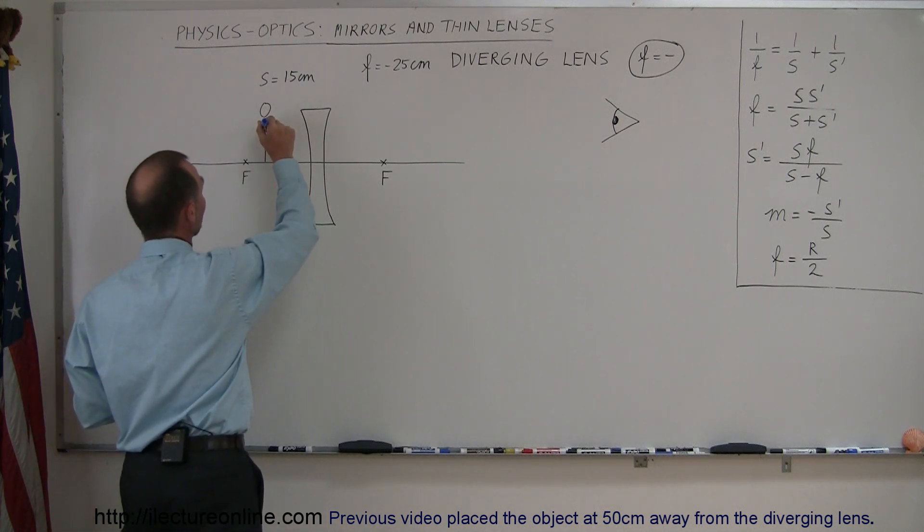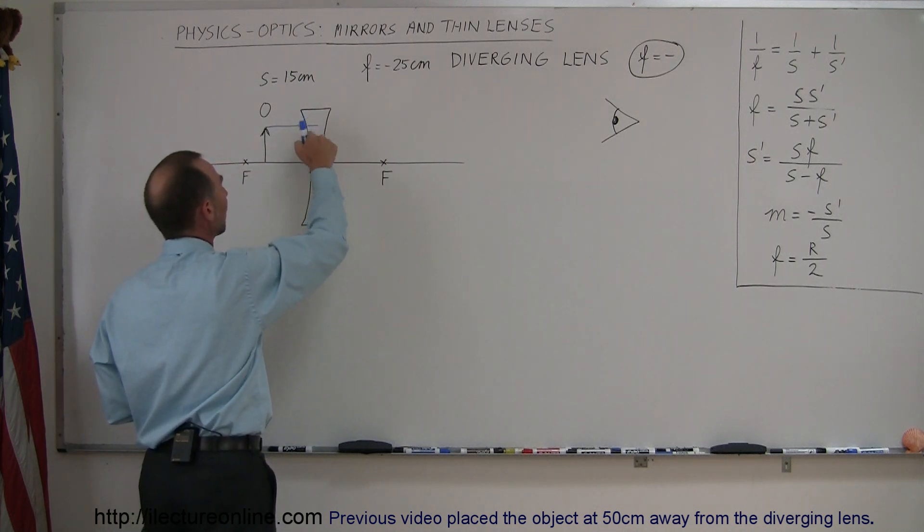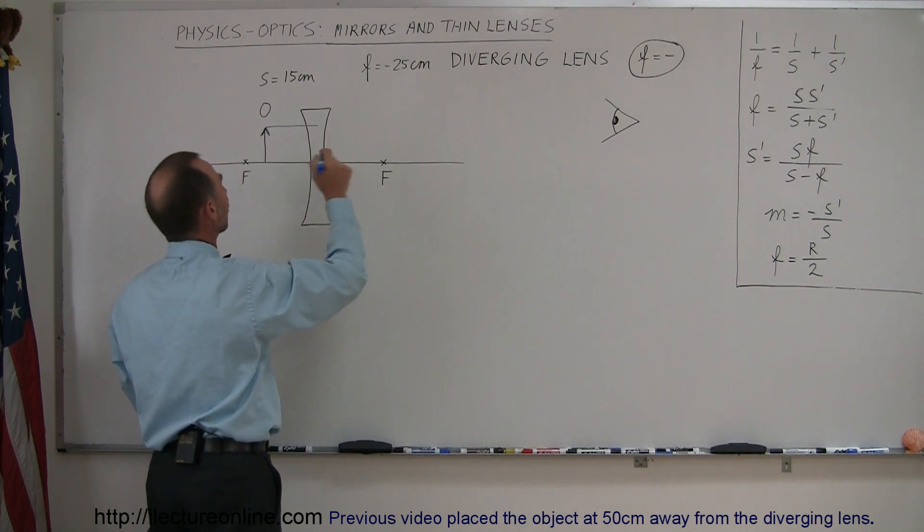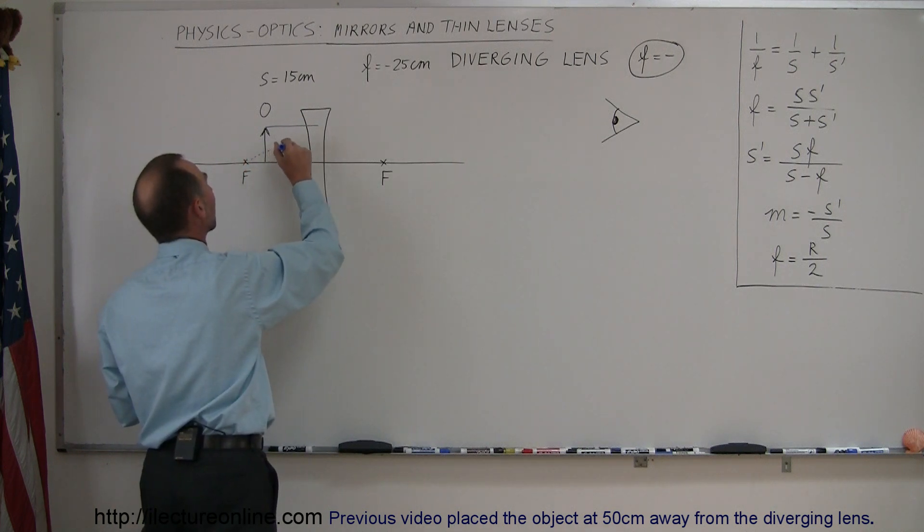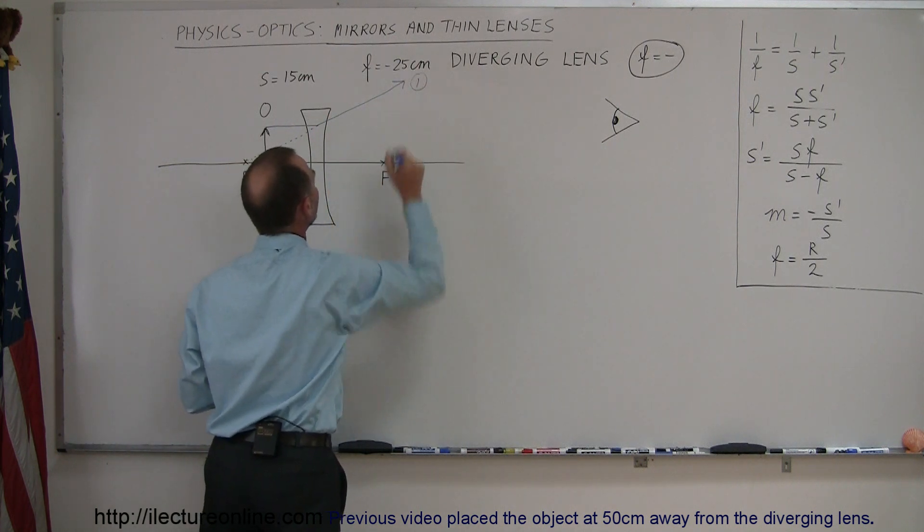starting from the top of the object, I draw a line parallel to the optical axis, or the normal to the lens, and then when we get to the lens, the ray will diverge as if it came from this focal point right here, and then continuing on in this direction, so that's ray number one.